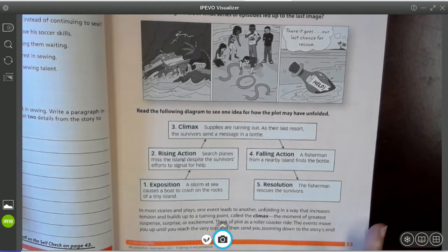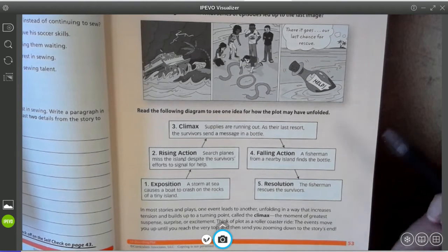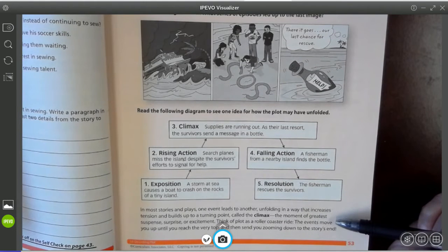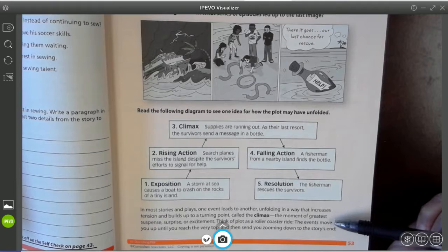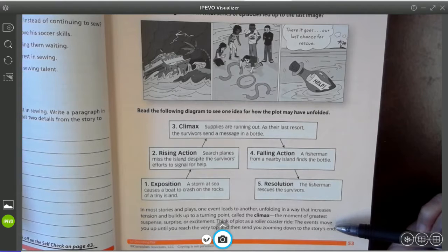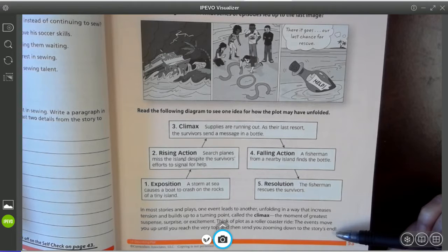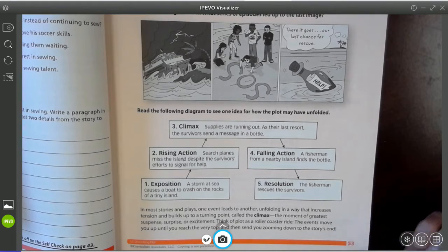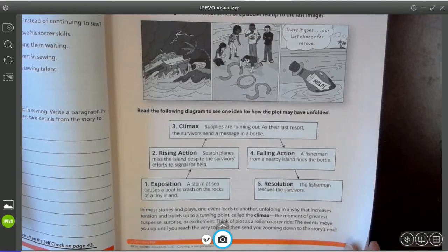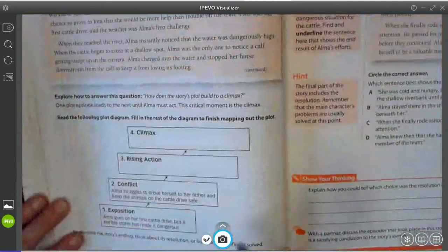So in most stories, one event leads to another unfolding in a way that increases tension and that builds up to a turning point called the climax. The moment of greatest suspense, surprise or excitement. Think of a plot as a roller coaster ride. The events move you up until you reach the very top. And then they send you zooming down to the end of the story.